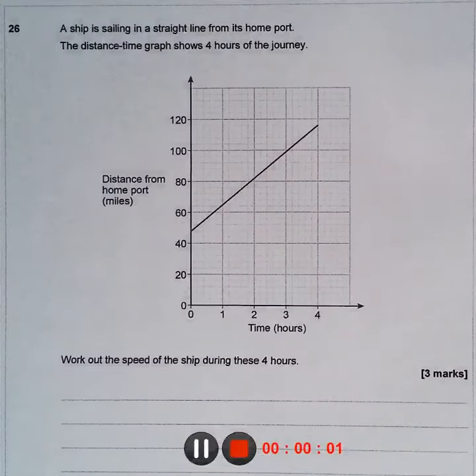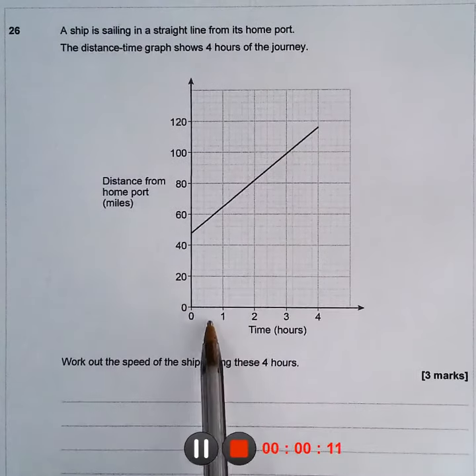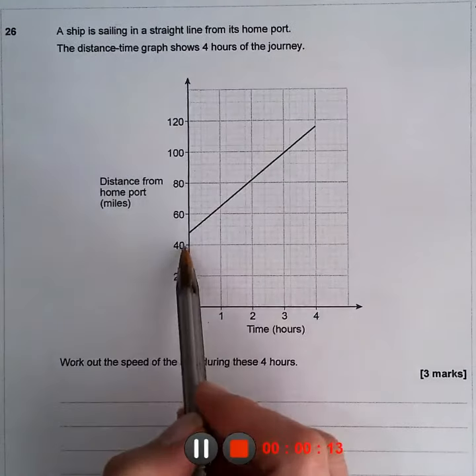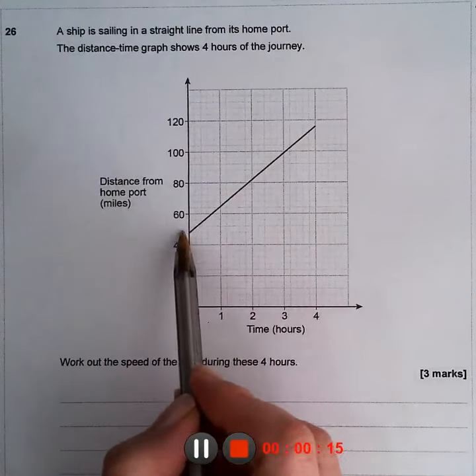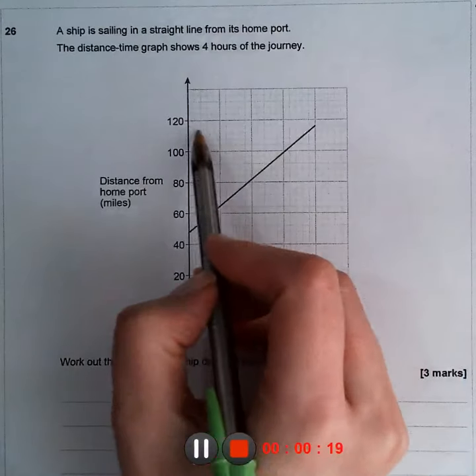A ship is sailing in a straight line from its home port. The distance-time graph shows four hours of the journey. When it starts, the distance is at 48 miles, and when it arrives, it's at 116 miles.